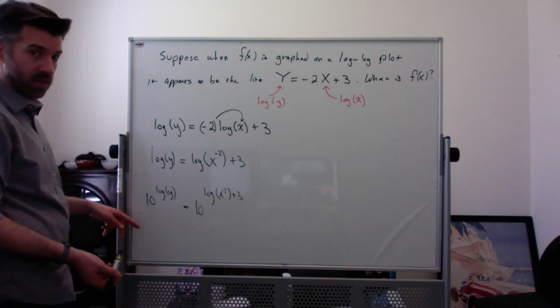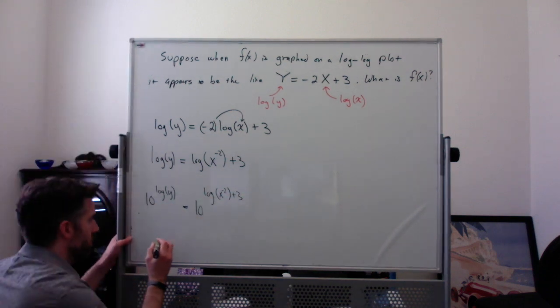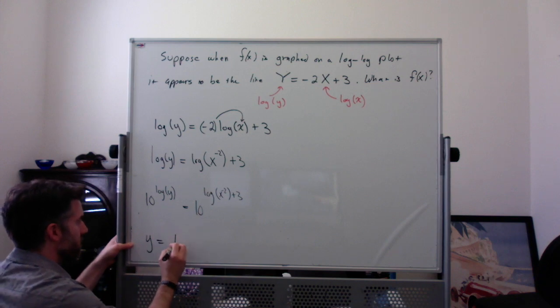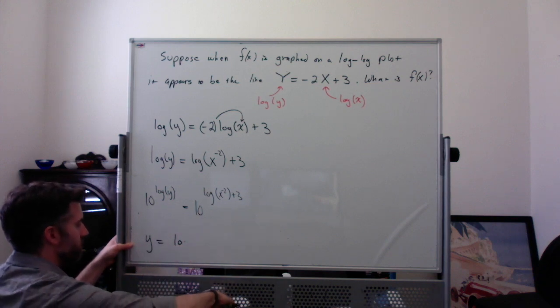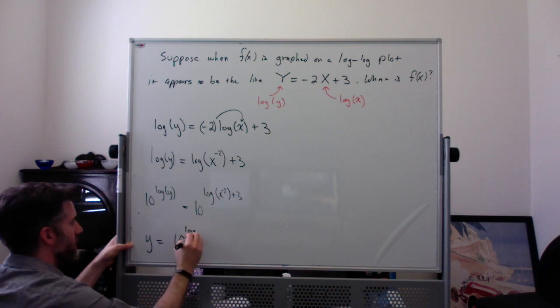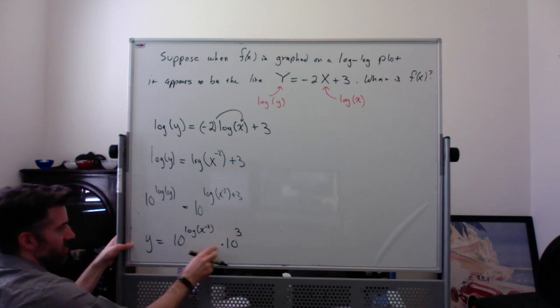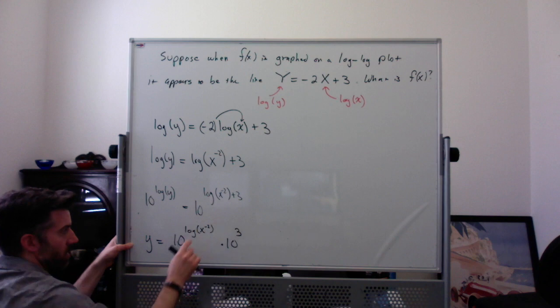The left-hand side, 10^log(y), always becomes y. The right-hand side we break up, so we get y = 10^log(x^-2) × 10^3. When you multiply things at the same base you add those powers—we're just going backwards here.